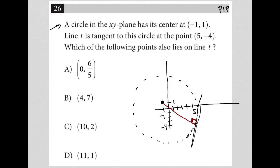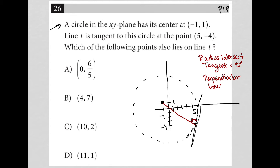The slopes of two perpendicular lines are opposite reciprocals. So let's review: radius intersects tangent equals 90 degrees — always. That'll always be the case. So if I figure out the slope of this radius, I would know the slope of the tangent line as well, which should help me figure out additional points on this line or test my answer choices.